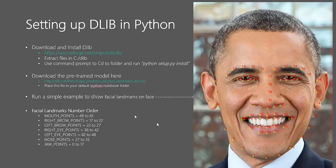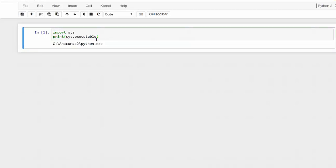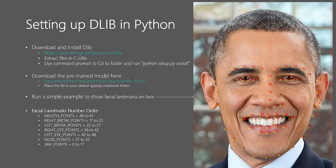The next step is downloading the pre-trained model — just go to the provided link and it automatically downloads the file for you. Then place this file in your default folder where your Python executable is installed. You can import sys and run sys.executable to find where your Python exe is installed, and place the shape predictor landmark model file in that same directory.